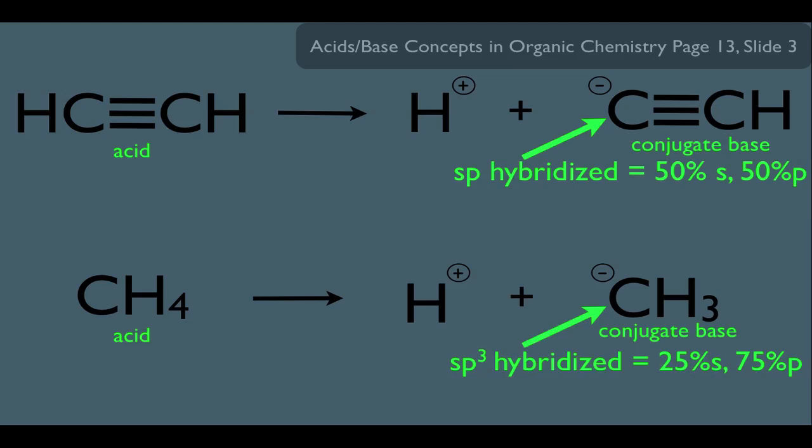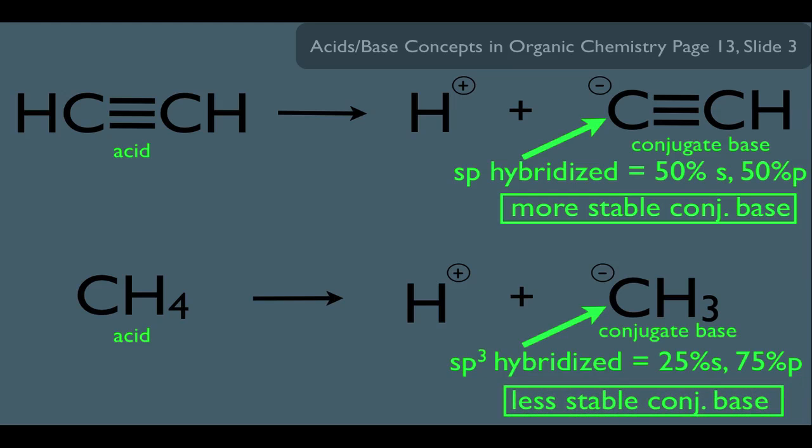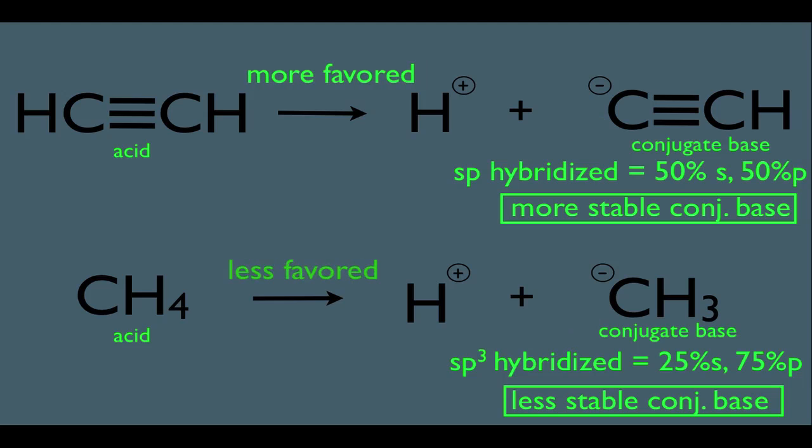Now, just blindly using the rule of thumb here, we said the more s character, the more acidic. That means the top conjugate base has more s character, making him a more stable conjugate base. He has 50% s compared to the bottom's conjugate base being only 25% s. That means the bottom conjugate base is less stable. Which means that the top reaction is more favored, and the bottom reaction is less favored.